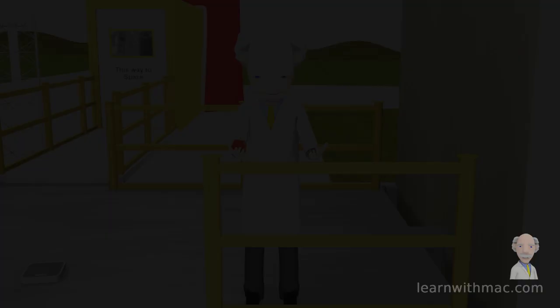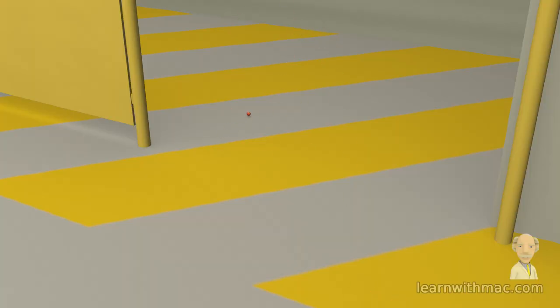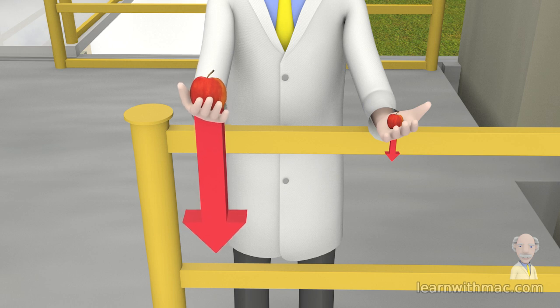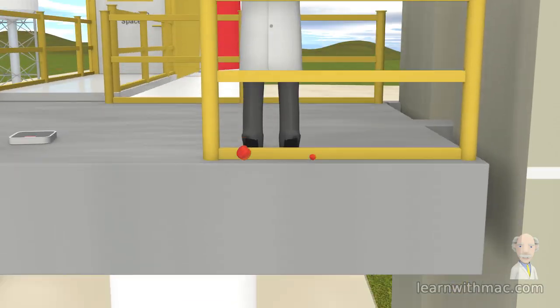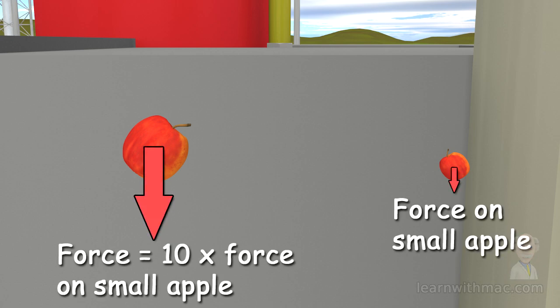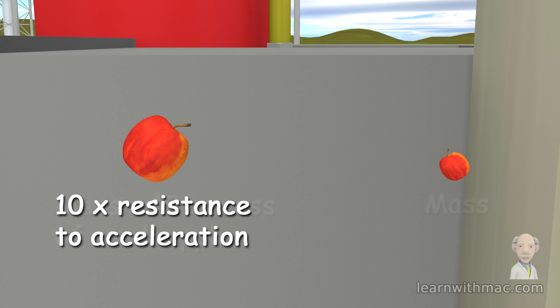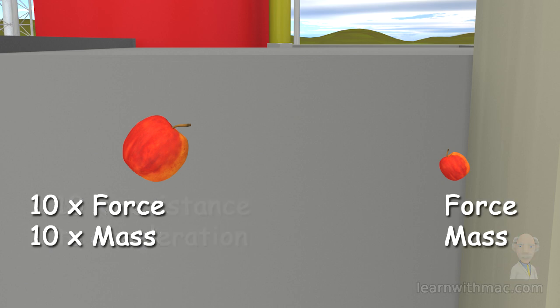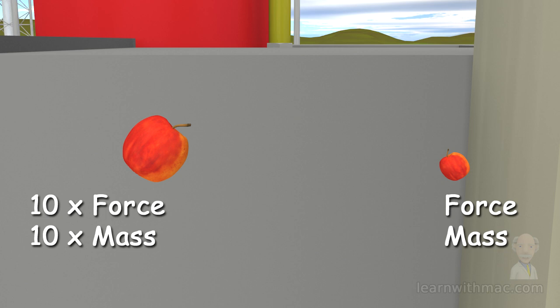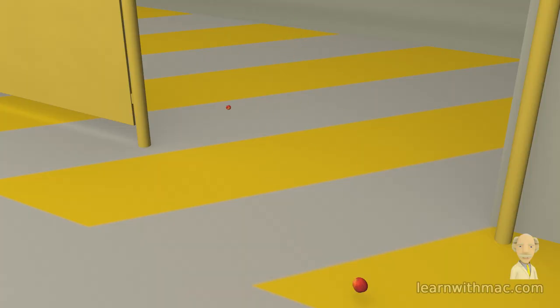So what happened? Well, the amazing fact is that all objects accelerate at the same rate due to the gravitational attraction of the Earth. Heavy objects and light objects all drop at the same rate. Why is that? In the case of the apples, the large apple has a force on it which is 10 times larger than the force on the small apple, so you may think it would accelerate faster. However, the large apple also has a mass 10 times larger than the small apple, and it therefore resists the acceleration by a factor of 10 times. The result is that the acceleration of the large apple is not greater than the small apple — it is exactly the same, and therefore both apples hit the ground at the same time.